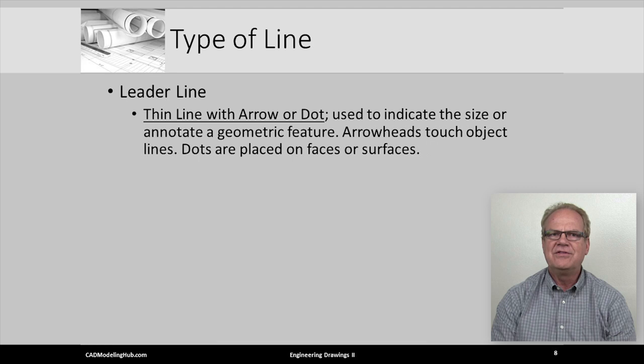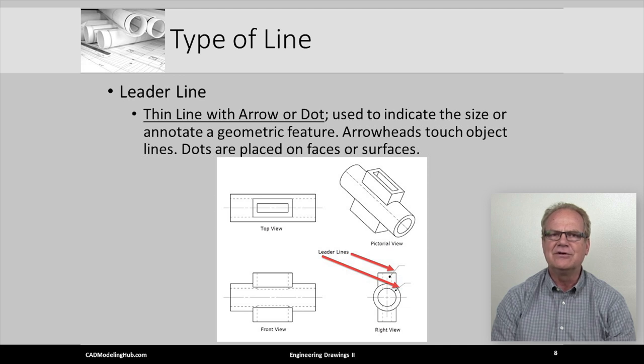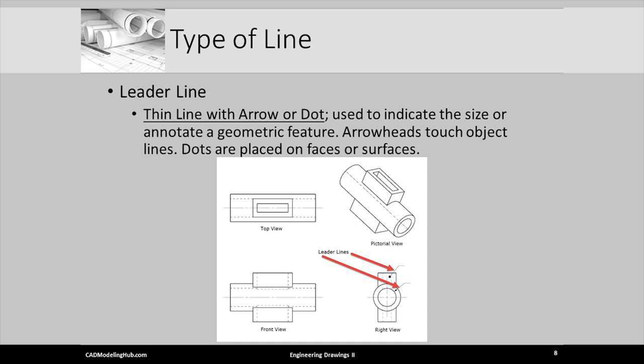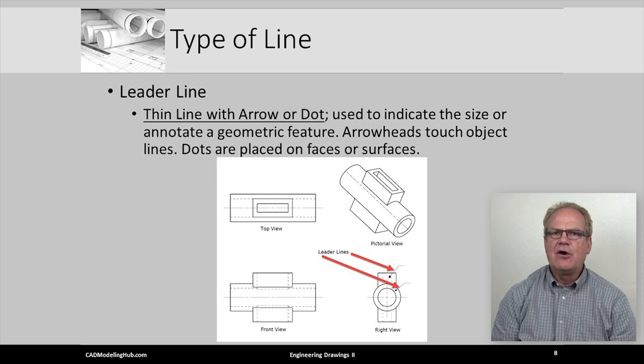Leader lines are solid, thin lines that terminate with either an arrow or a dot as illustrated in this figure. When annotating a surface, the dot terminator is used, being placed on the white space of the surface being annotated. When dimensioning or annotating an edge of a feature, the arrow terminator is used, and the arrow touches the object line. In the ASME standard, leaders generally have a horizontal shoulder that connects to the beginning or end of a horizontally written annotation. However, in the ISO standard, leaders are generally shoulderless, and the annotation is written at the same angle or orientation as the leader.